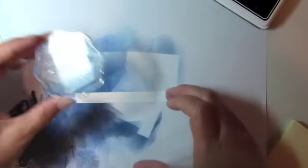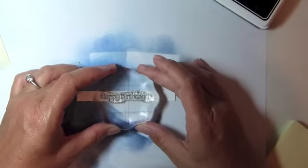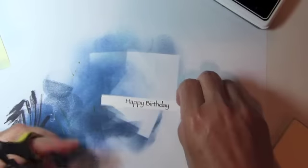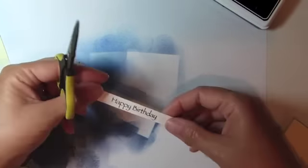Stamp the sentiment, also from the Wetlands stamp set, onto a narrow strip of white cardstock and then trim the individual words using scissors.